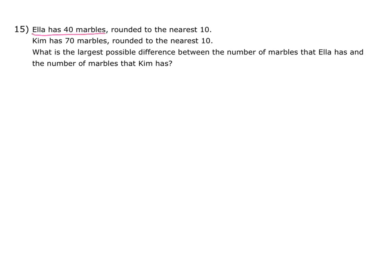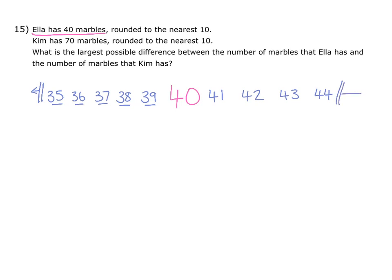If we start with Ella's marbles first of all, we're told that she has 40 marbles, but that this is an amount rounded to the nearest 10. This means there is a selection of numbers we could choose from. She could have 39, 38, 37, 36, or 35 marbles. Anything lower than 35 would round down to 30. These are the numbers in the 30s which would all round up to 40. Then she could have a number higher than 40: 41, 42, 43, or 44. Anything higher than 44 would round up to 50, not down to 40. So these are all the potential possible amounts of marbles that Ella could have if they were rounded to the nearest 10, because all of these numbers would round either up or down to 40.